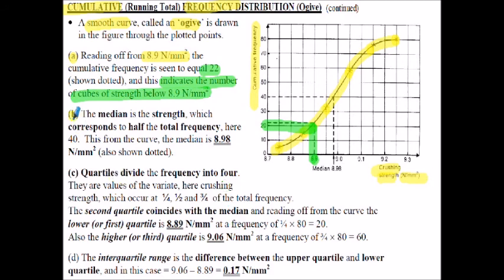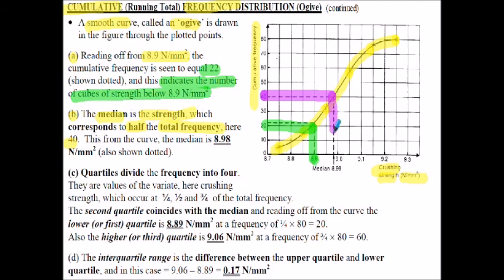Part B - we're asked to find the median strength of the curve, which corresponds to half the total frequency. The total frequency is 80 in this particular case, so half of that is 40. On the vertical axis we start at 40, draw a line horizontally across until it hits our S curve, then draw a line down. That gives us a value of around 8.98 N/mm² - so at the median value of our frequency, the strength value is 8.98 N/mm².